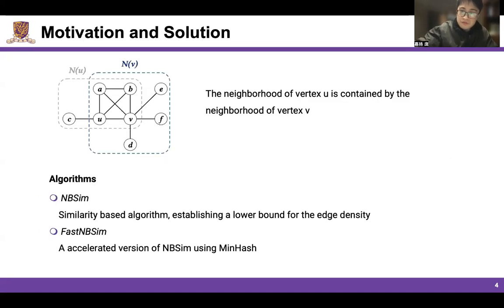So the motivation for our algorithms is that in a quasi-clique, we find that the neighborhood of one vertex tends to be contained by the neighborhood of another vertex. Like in this graph, the neighborhood of vertex U is contained by the neighborhood of vertex V, and edge UV is a clique.